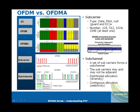The key message is that in OFDMA we can serve multiple users in a particular time symbol, and OFDMA is scalable — 512 subcarriers for a 5 MHz channel or 1024 subcarriers for a 10 MHz channel. The FFT implementation is scalable and highly efficient. A set of subcarriers forms a subchannel, and subcarriers within a subchannel may not be adjacent. We will cover permutations and the difference between diversity allocation and contiguous allocation in coming slides.